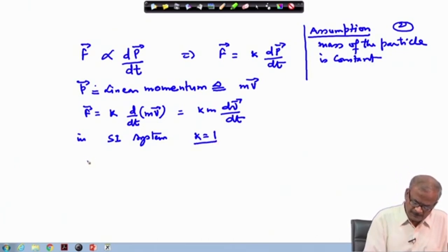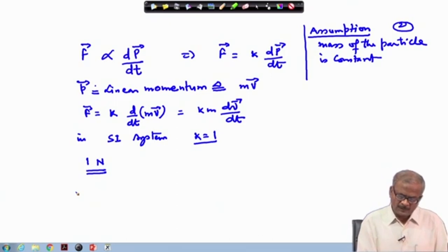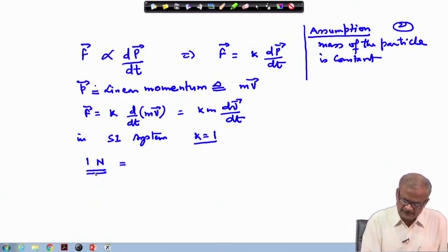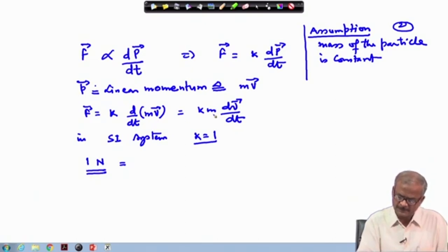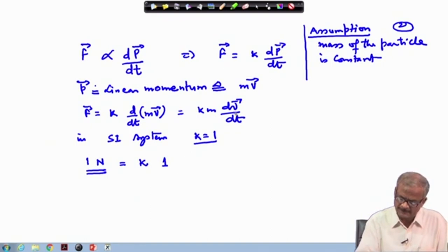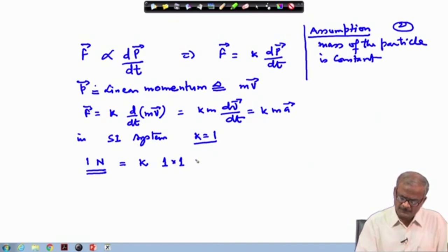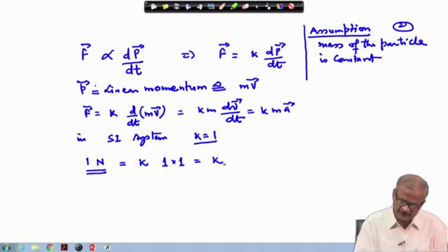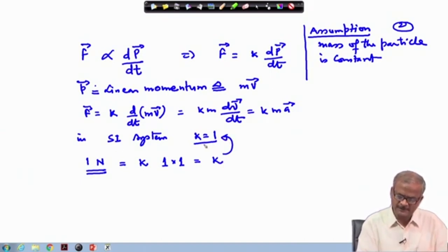In the SI system, k turns out to be 1. This is achieved by defining 1 Newton as the force which produces an acceleration of 1 meter per second squared in a body of mass 1 kg. So with mass 1 kg and acceleration dv/dt, k × m × a = 1, giving k = 1. Therefore, in the SI system the units are defined such that k = 1, and Newton's equation is written in the familiar form F = ma.